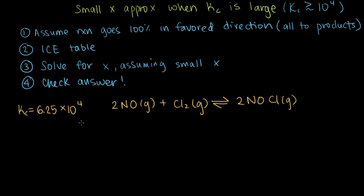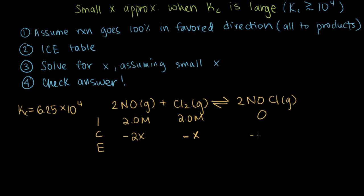We're going to do it two ways. First, we'll set up our ICE table. The initial concentrations are 2.0 molar for NO and 2.0 molar for Cl2, and we have no NOCl at the beginning. If we set up the ICE table in the natural way, we say we're going to make some amount of NOCl, so we write minus 2x for NO, minus x for Cl2, and plus 2x for the product. At equilibrium, we then have 2.0 minus 2x for NO, 2.0 minus x for Cl2, and 2x for NOCl.